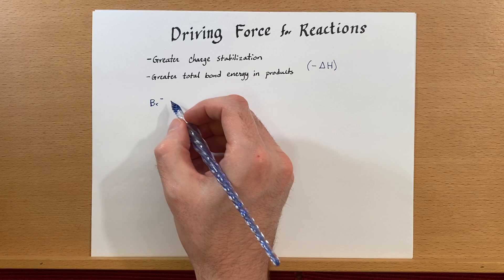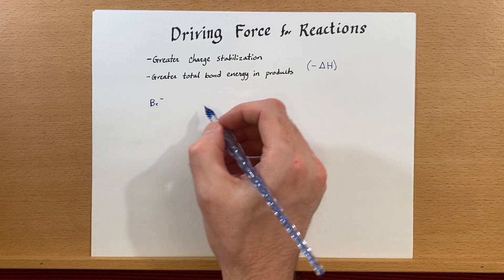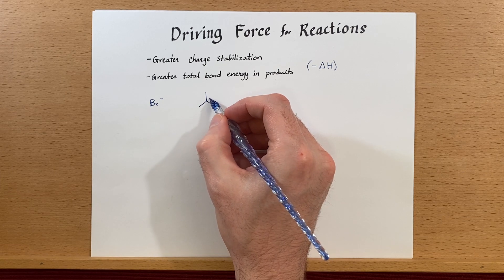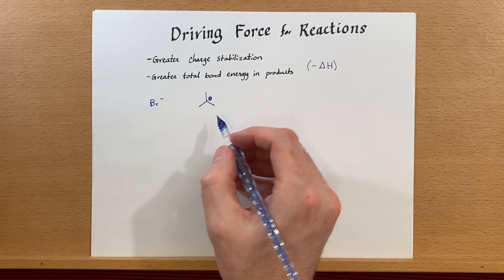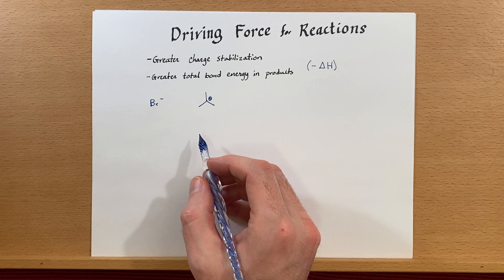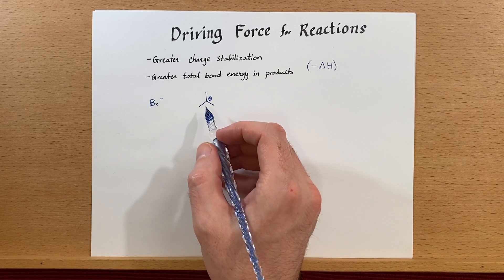So here we'll pick a bromine that has a negative charge on it, and then we'll select a carbocation right here. Now, this is a tertiary carbocation, so it's a little bit more stable than its other counterparts.